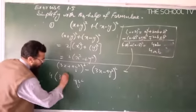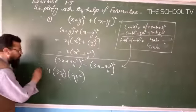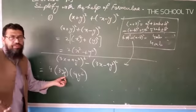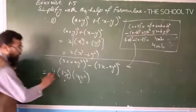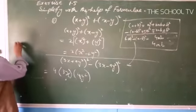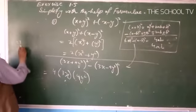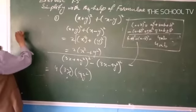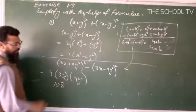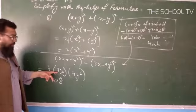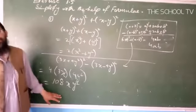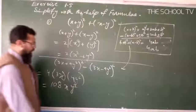So it becomes 4 into first into second. The multiplication of numbers: 4 × 3 × 9 = 108. With x and y, the answer is 108xy. This is the simplest form — the required answer.